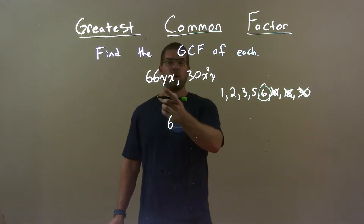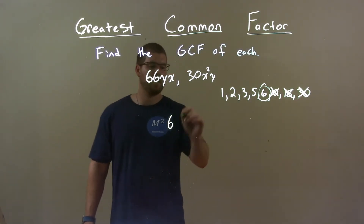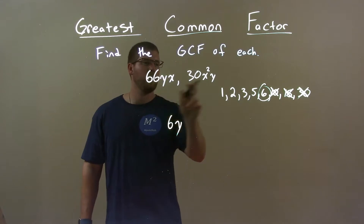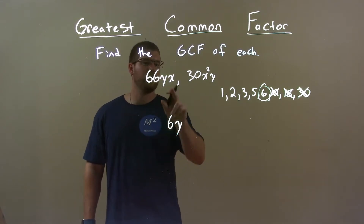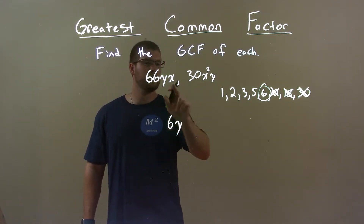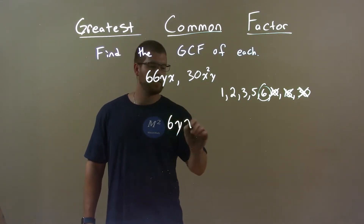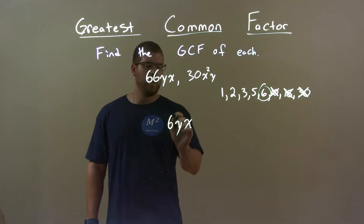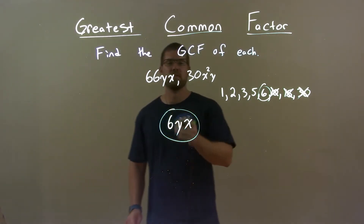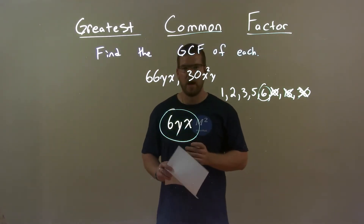Now we have 1y in each term, so we're good — 1y can go into both. And we have 1x here and 2x there, so the least of the two is just 1x. And there we have our final answer: 6yx.